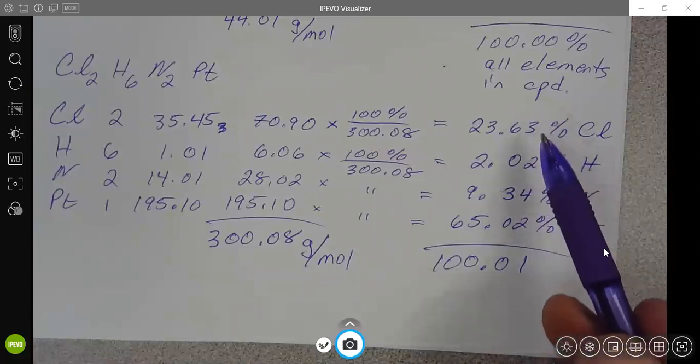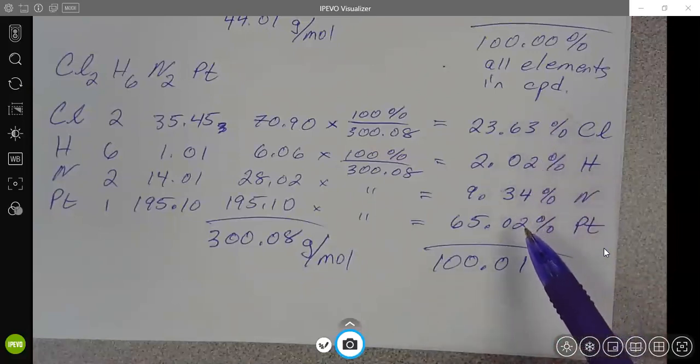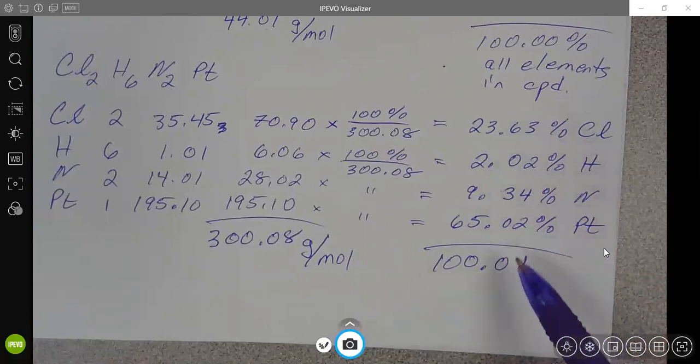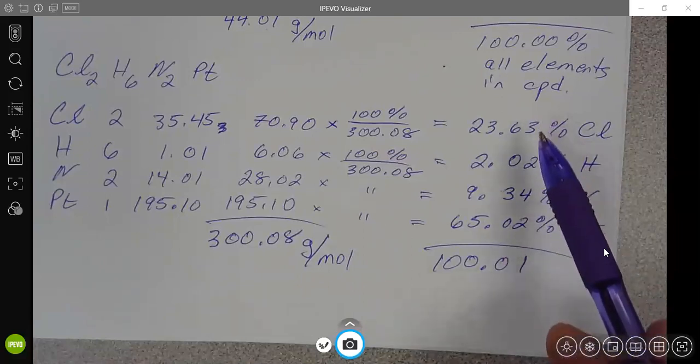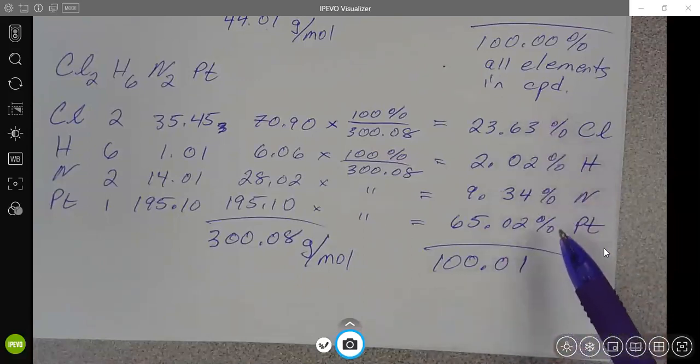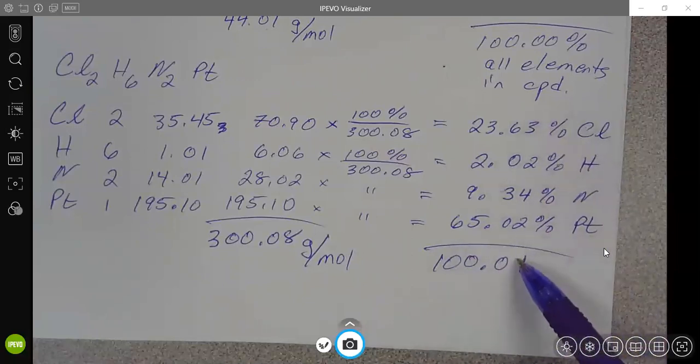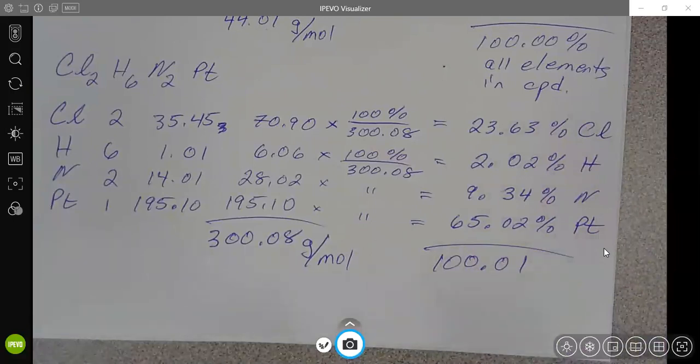Now, that's hard when you've got more than two elements. So you might get 100.02 or 100.01. You might get 99.99 or 99.98.